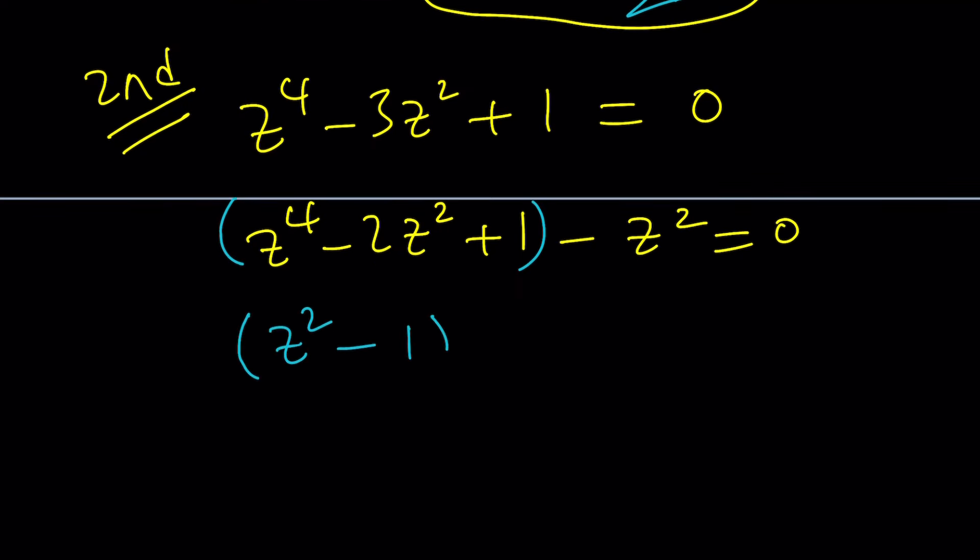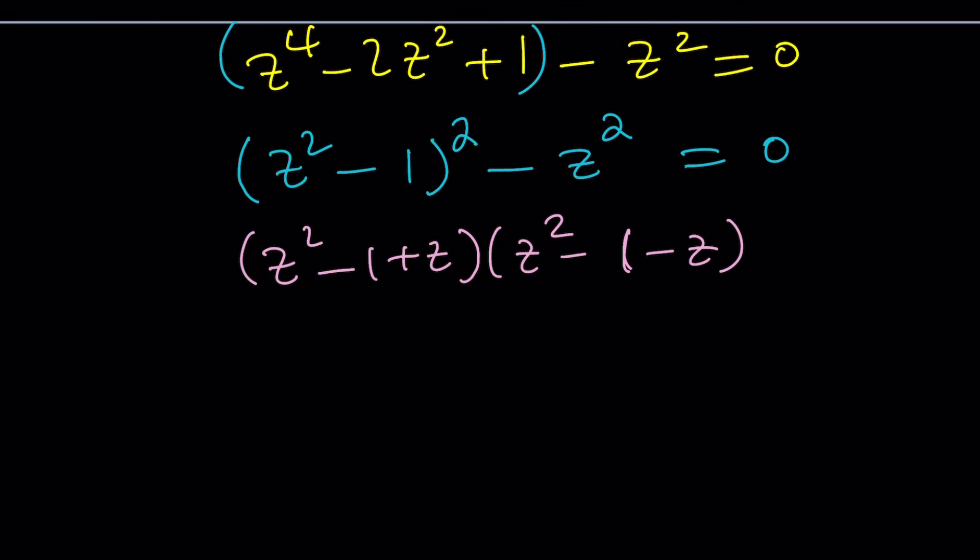So now this becomes a difference of 2 squares which can be factored as z squared minus 1 plus z and z squared minus 1 minus z. Of course we want to write things in standard form, so let's write it as z squared plus z minus 1 multiplied by z squared minus z minus 1, and the whole thing is equal to 0.